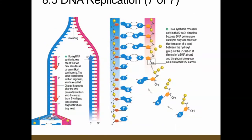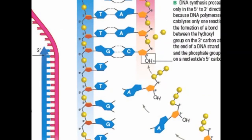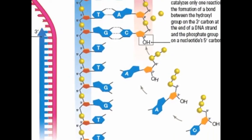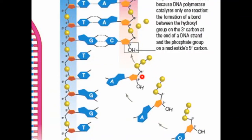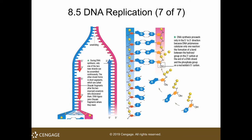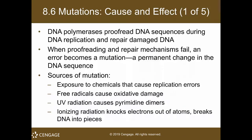How does one add bases? It is through the hydroxide group of the 3' carbon — that's why it's called the 3' to 5' direction. You have the incoming strand at the 5' end. The phosphates at the 5' position attach to the oxygen at the 3' position. That is your DNA replication mechanism.